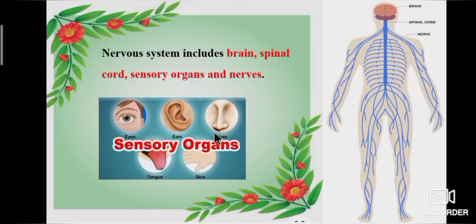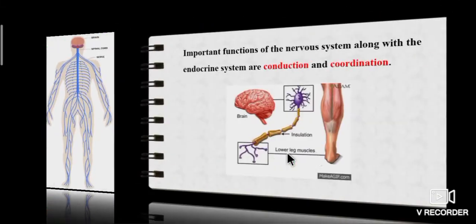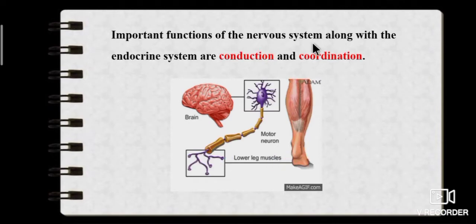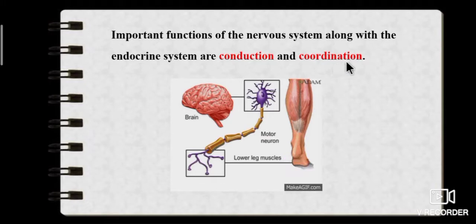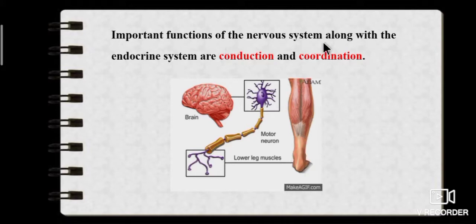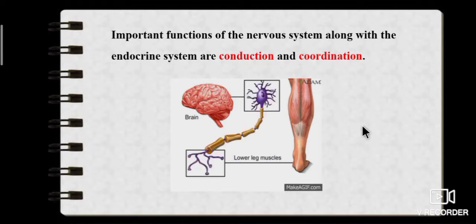There are five sensory organs: eyes, ears, nose, tongue and skin. The important functions of the nervous system along with the endocrine system are conduction and coordination. Nerves combinedly conduct the message from the brain and carry out actions.